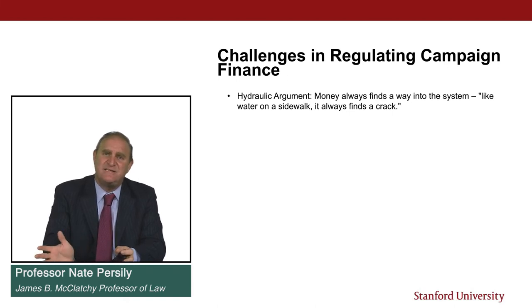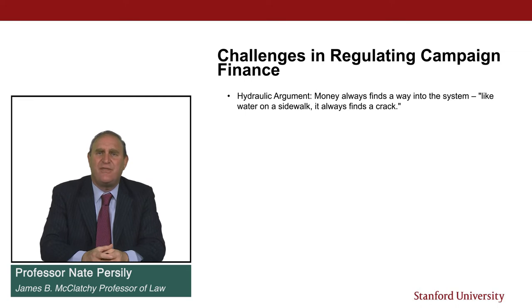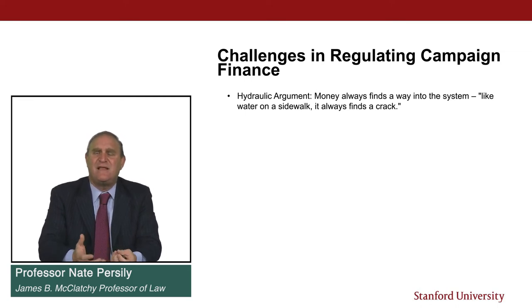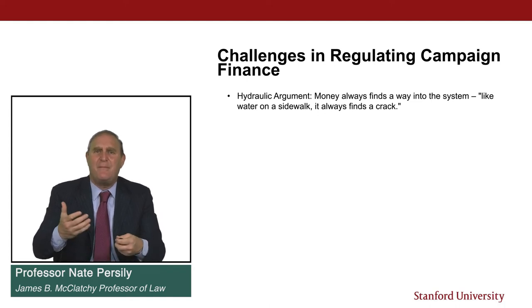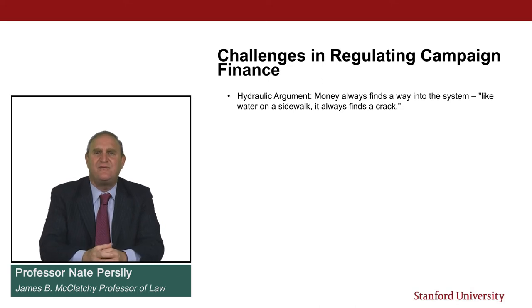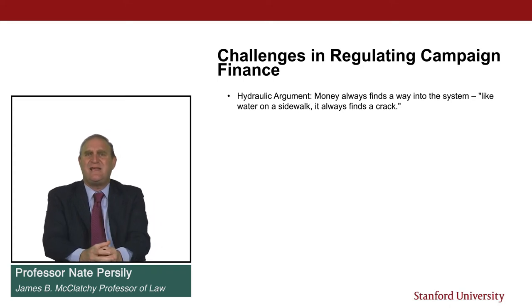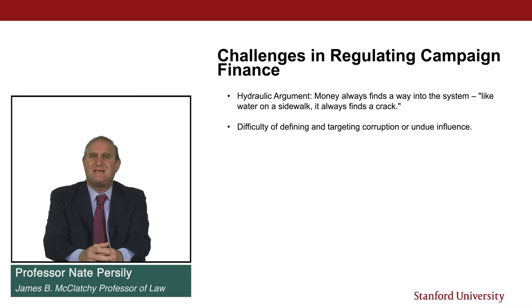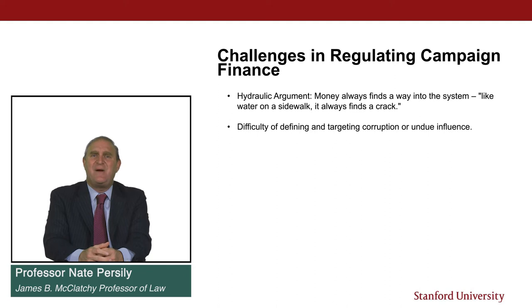Part of what campaign finance law does is it shifts money from one direction to another. I don't want to suggest it's fatalist — campaign finance laws do have impacts. But depending on the constitutional rules, money will move to its highest and best use, and political entrepreneurs will try to get money from eager contributors. The second challenge in regulating campaign finance has to do with the difficulty of defining and targeting corruption or undue influence. The idea of corruption is a very malleable concept, and it is absolutely critical in understanding campaign finance law. Organizing the system to target corruption proves to be very difficult.